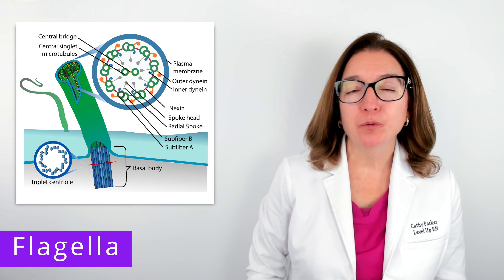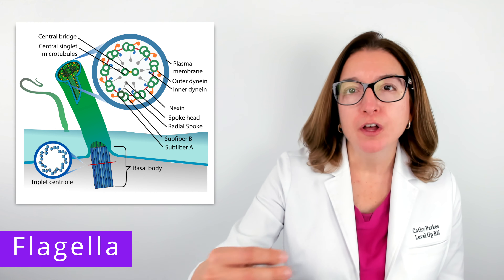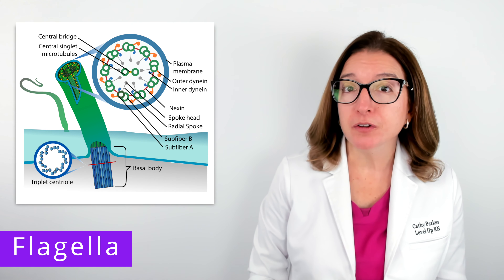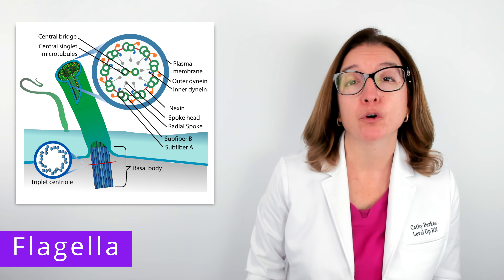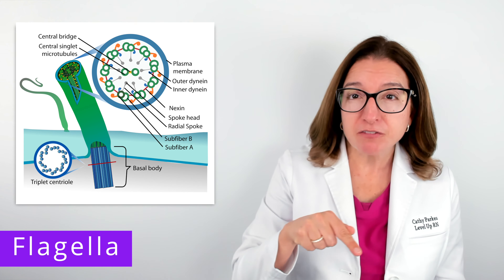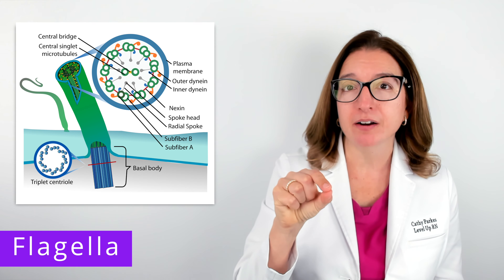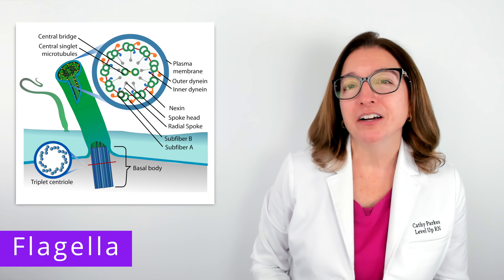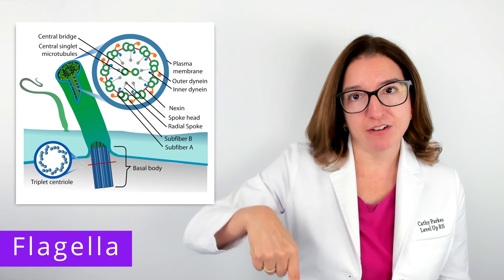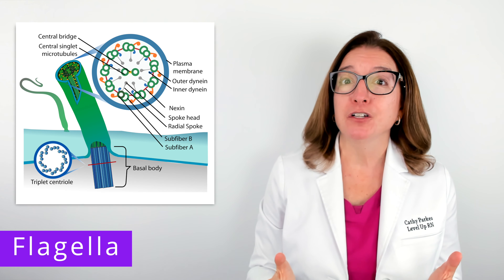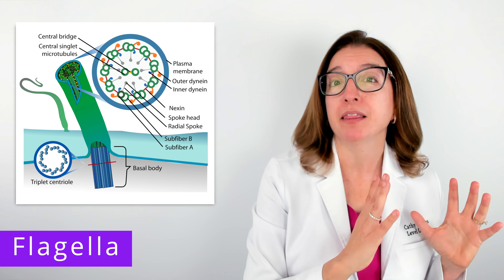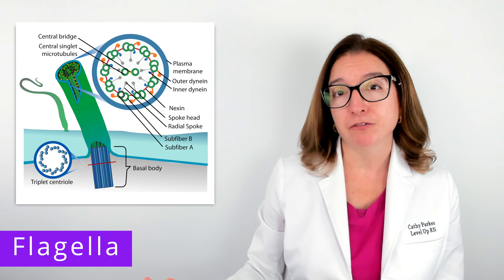Next, let's talk about flagella, which are structures that help the cell to move. Eukaryotic flagella are composed of a complex of microtubules. These microtubules are long hollow tubes made up of the protein tubulin arranged in a 9 plus 2 array, which means we have nine pairs of microtubules surrounding a central pair of microtubules. Unlike prokaryotic flagella that move in a propeller-like fashion, eukaryotic flagella move in a whip-like fashion. Another key difference is that eukaryotic flagella are surrounded by the plasma membrane, whereas prokaryotic flagella are not.